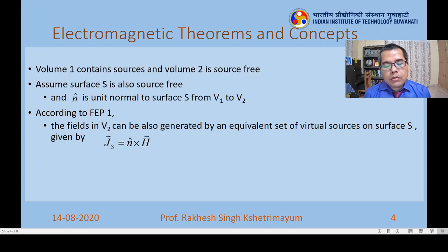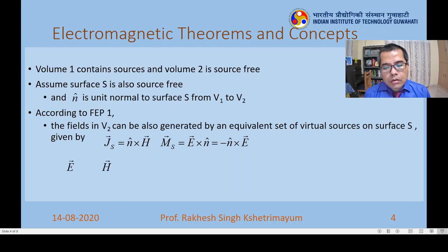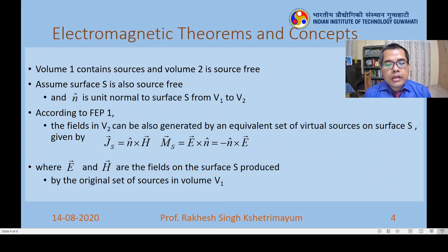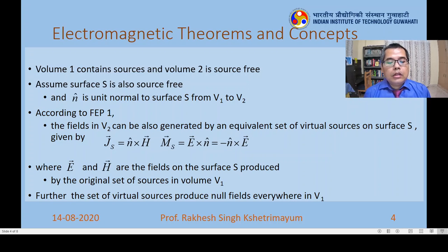J_s = n × H gives the tangential component of the magnetic field. We can also introduce a magnetic current density on the surface given by M_s = E × n, where n is the unit normal to the surface and E is the electric field, so E × n gives the tangential component of the electric field. Here, E and H are the original fields produced by the original set of sources in volume V1.